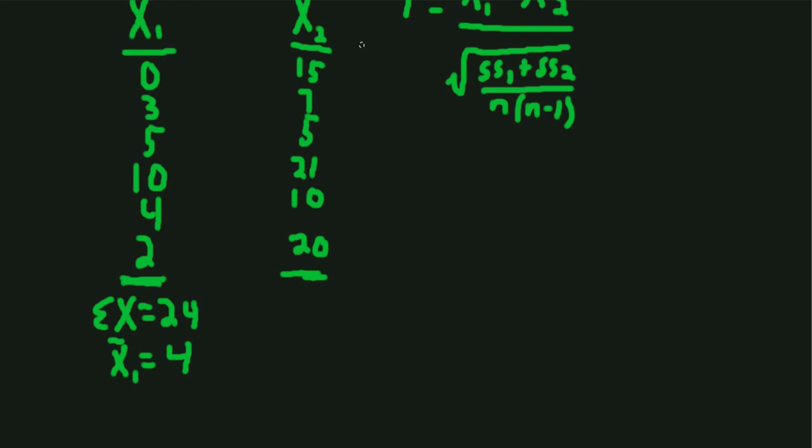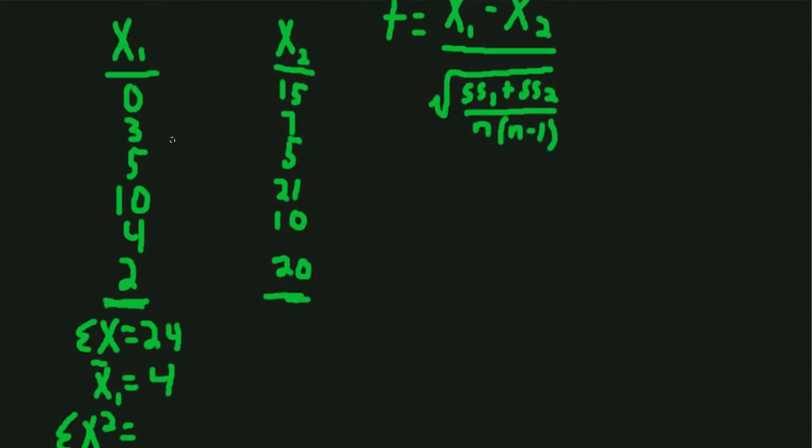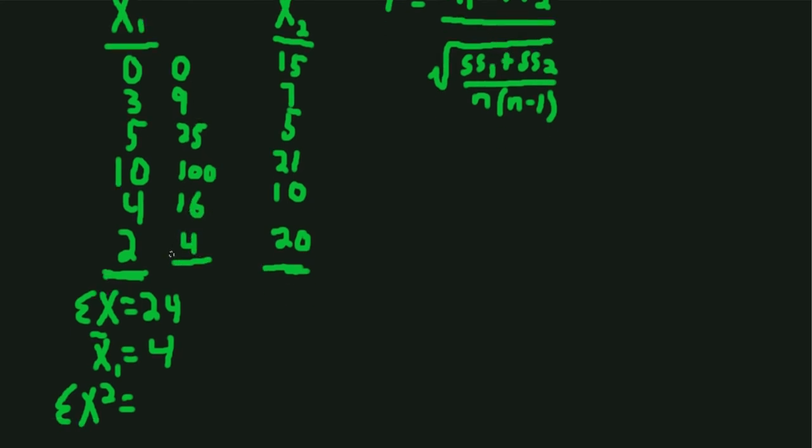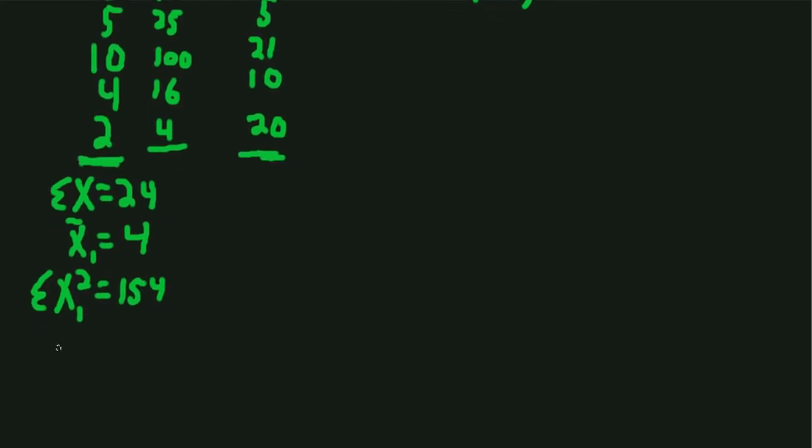We'll continue with the rest of the calculations for this group before we move on to the second group. We will also need when we calculate the sum of squares, we will need as an ingredient the sum of the squared X's for this group. So we'll square up all the scores: 0, 9, 25, 100, 16, and 4. If we add all those together, we get sum of the squared X's for group 1, which is 154.